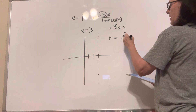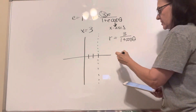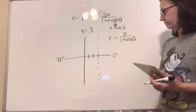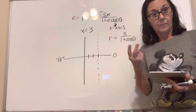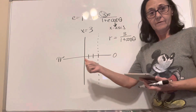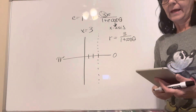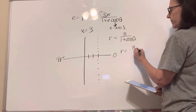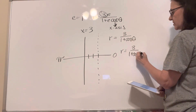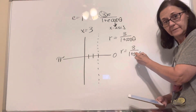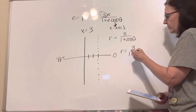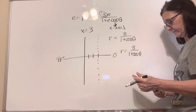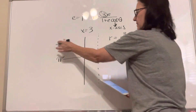It's just going to be 3 over 1 plus cosine theta. Because we're on the x-axis, we're going to plug in 0 radians and pi radians to get our points. Since it's a parabola, only one will make sense. So we'll plug in 0: r equals 3 over 1 plus the cosine of 0 degrees, which is 1. So the r value is going to be 3 over 2, which is 1.5. That one makes sense, and it's going to open that way.